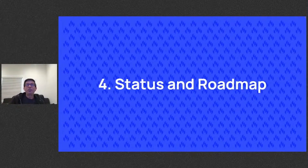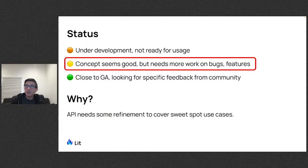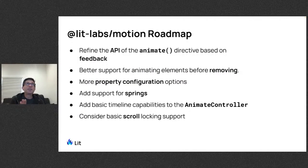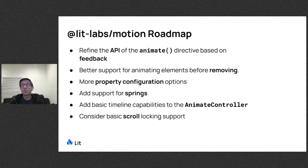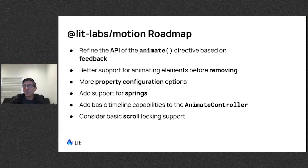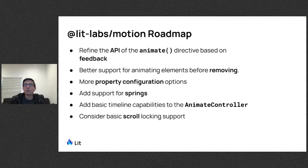Where are we with this package? We're happy but still have things to work on. We want to refine the API based on feedback. Specifically: better support for animating elements before removing them, more configuration around which properties are used for flipping, built-in support for springs (Justin has a PR for that), possible timeline capabilities for the animate controller, and potentially hooking into the upcoming scroll timeline web animations feature for scroll-linked effects.